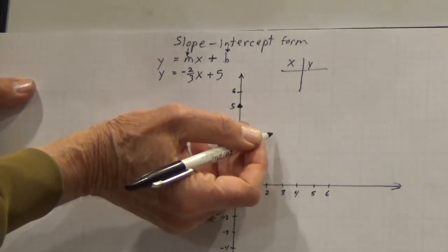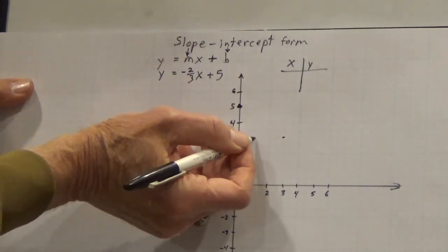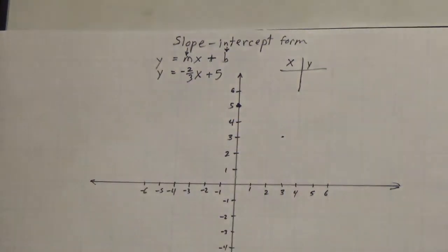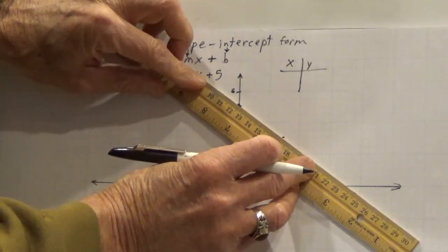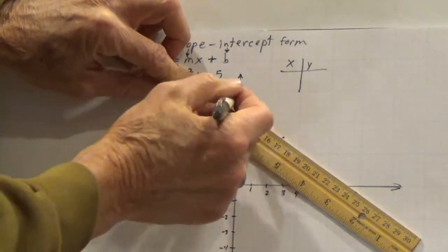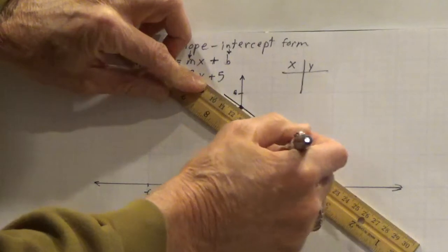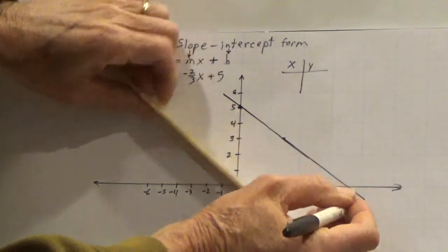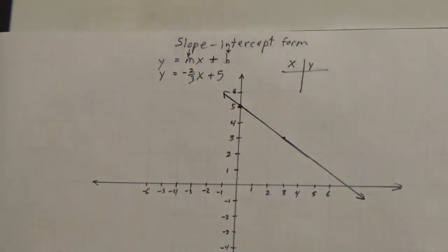So we have the point right here — I can find it on my graph. 2 down and 3 over. Now let's put my line in. And that's the line: y equals negative 2 thirds x plus 5.